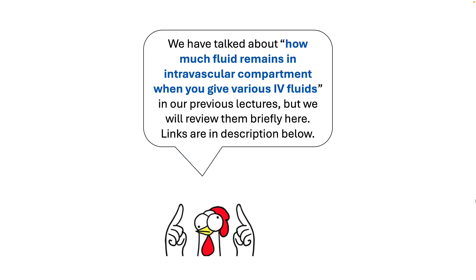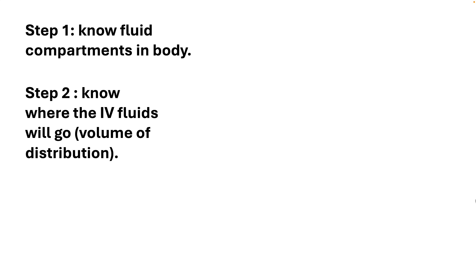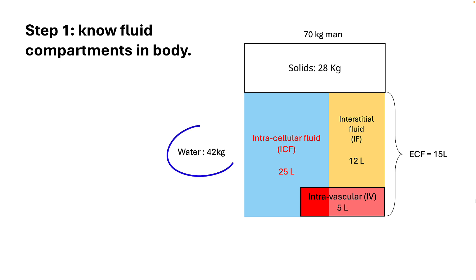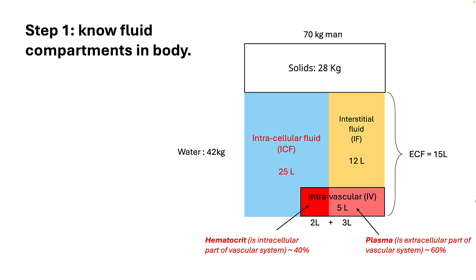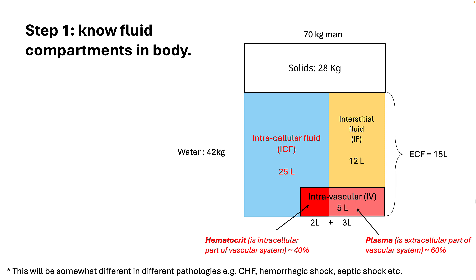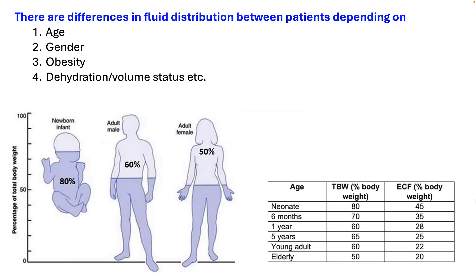We will touch this topic briefly here. To know how much volume remains intravascular, you need to know two things: the fluid compartments present in the body and the volume of distribution of fluid. In a 70 kg person, 42 kg of which is water is distributed in the ICF and ECF. The ECF is divided into interstitial and intravascular compartments. Note that the intravascular compartment has an ICF part — the cellular component — and plasma, which is the ECF portion. This will vary depending on your hematocrit, and these are approximate numbers that vary with heart failure, hemorrhage, sepsis, age, gender, obesity, and volume status.